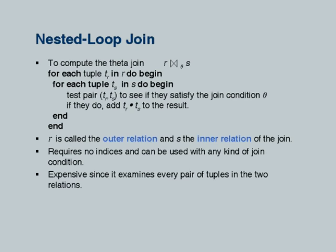Nested loops is also potentially very inefficient. If I had a million tuples in each of the relations, a million times a million will run forever — it will never finish. So nested loops join is an operation of last resort if nothing else can be used. What is good about it is that it can be used with any join condition, but the bad thing is it is very inefficient. There are variants which are more efficient as we will see.